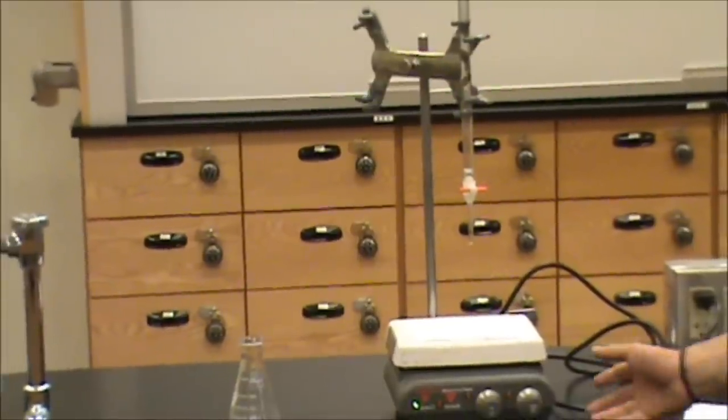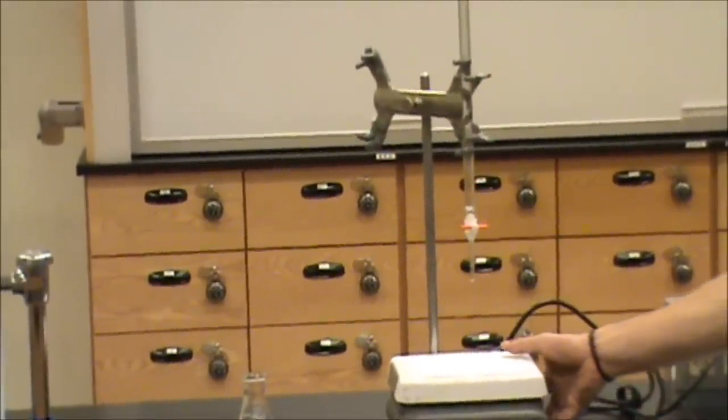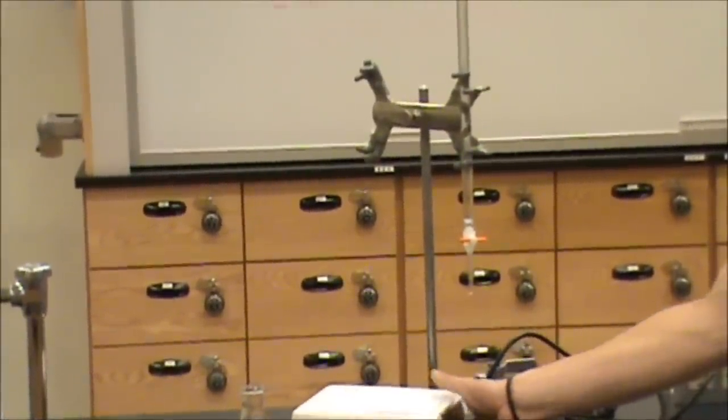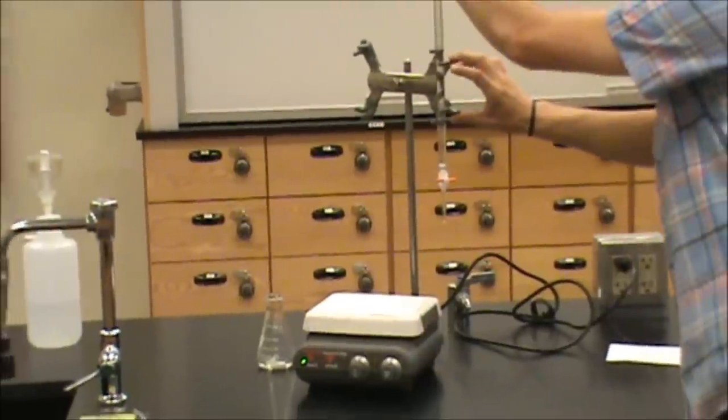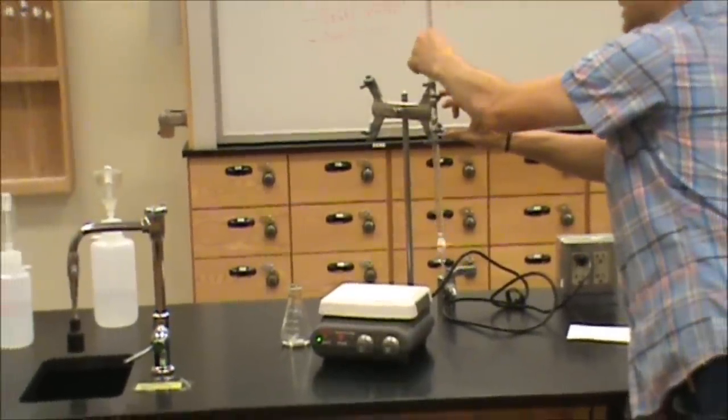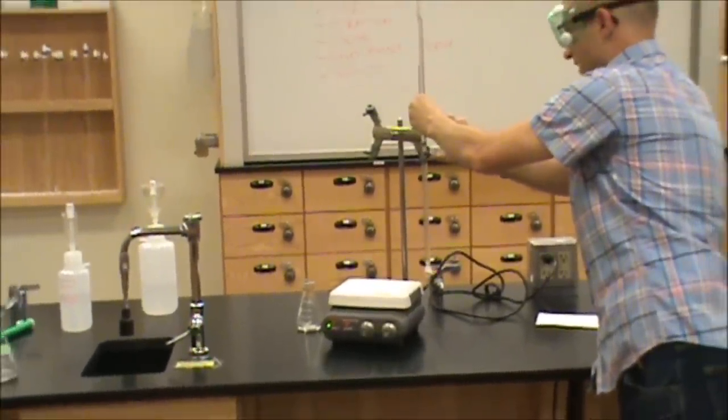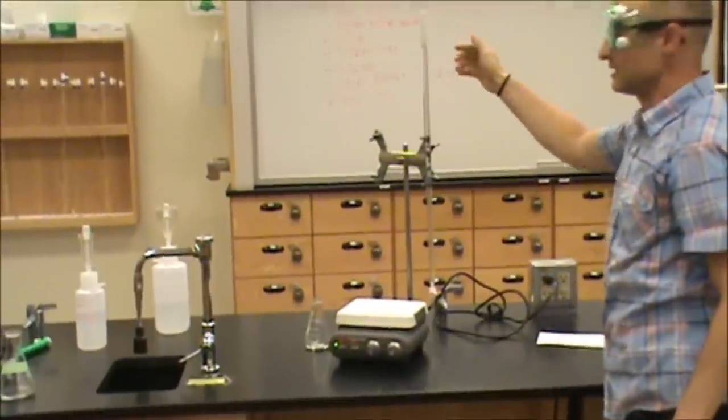Before we begin, we have to record the initial volume in the burette. Perhaps the easiest way to do this is to gently release the clamp and slide the burette downwards to a level where you can easily see the fluid.